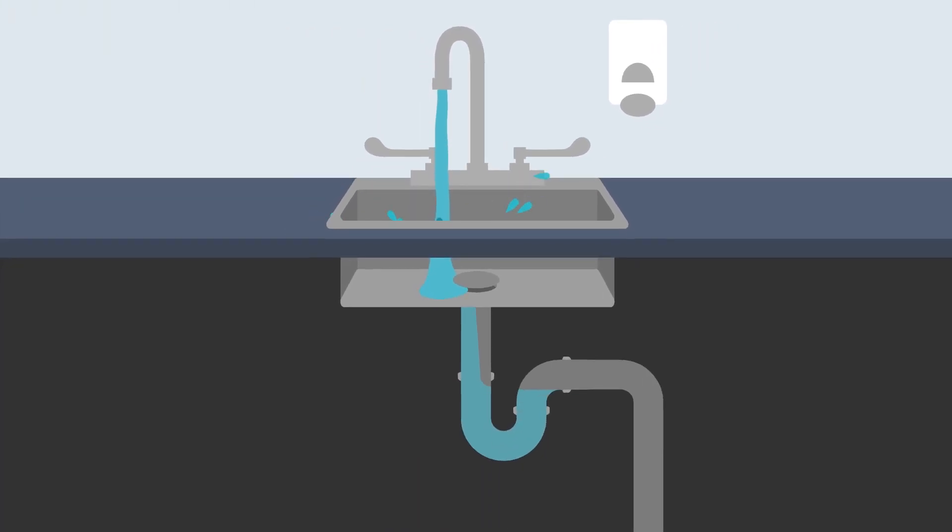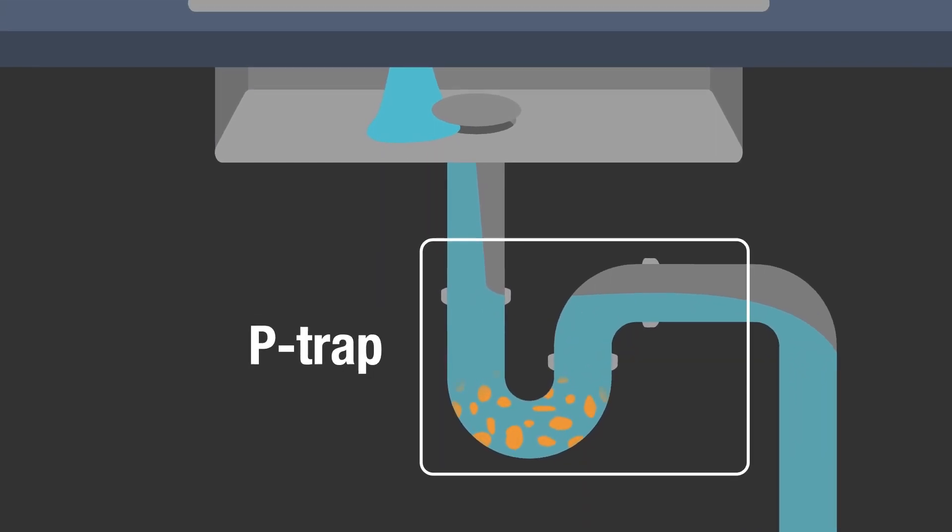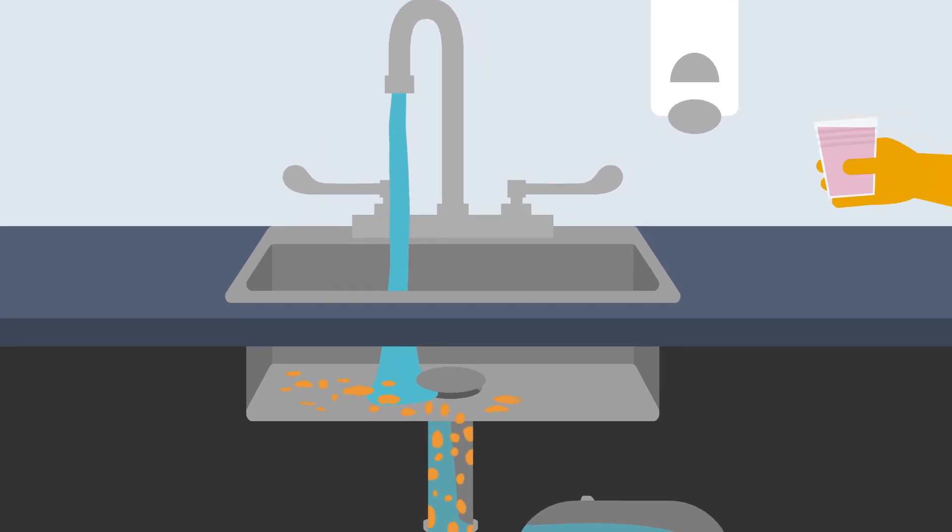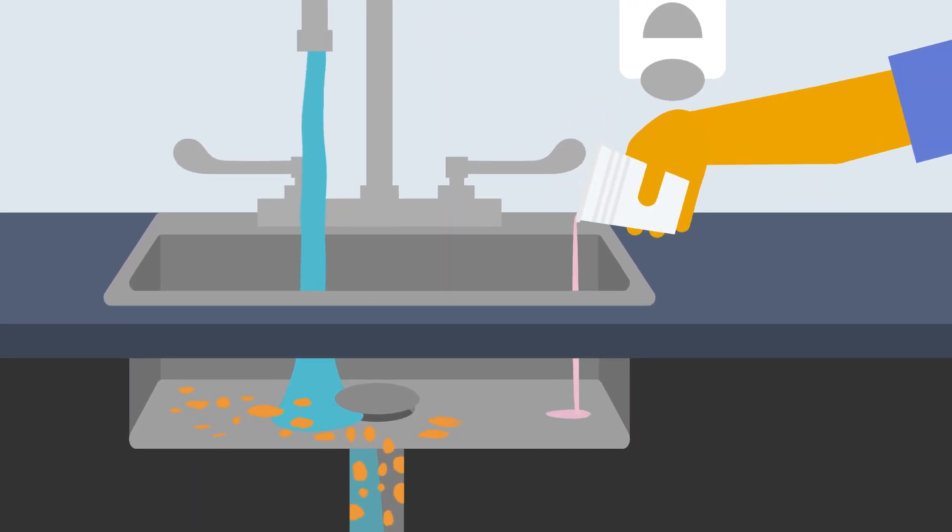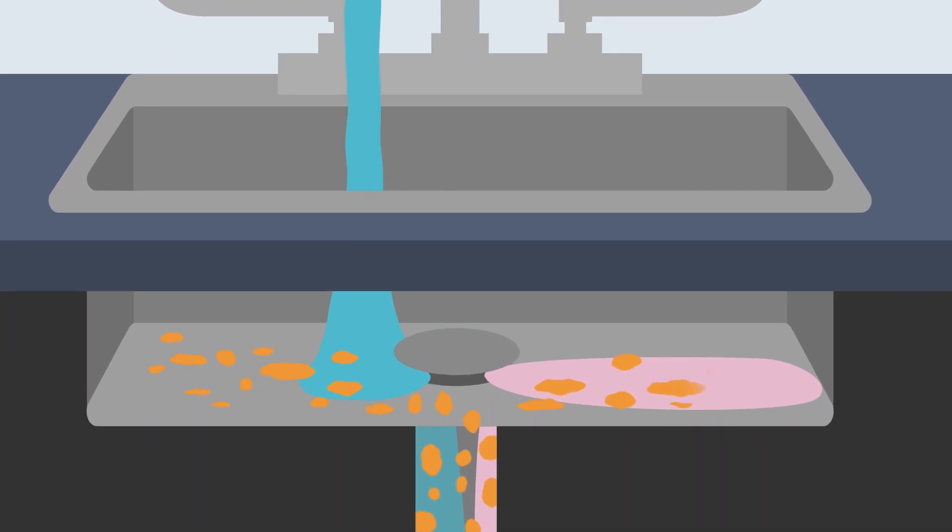Pathogens can spread not only during washing activities, but also can grow in the p-traps of sinks and travel up the pipe to the outlet of the sink. Liquids commonly poured into hospital sinks help the bacteria grow. And bacteria can travel with a speed of up to one inch per day.